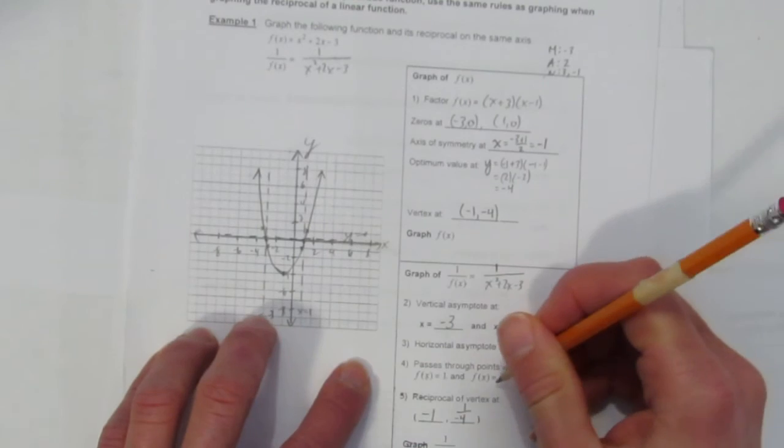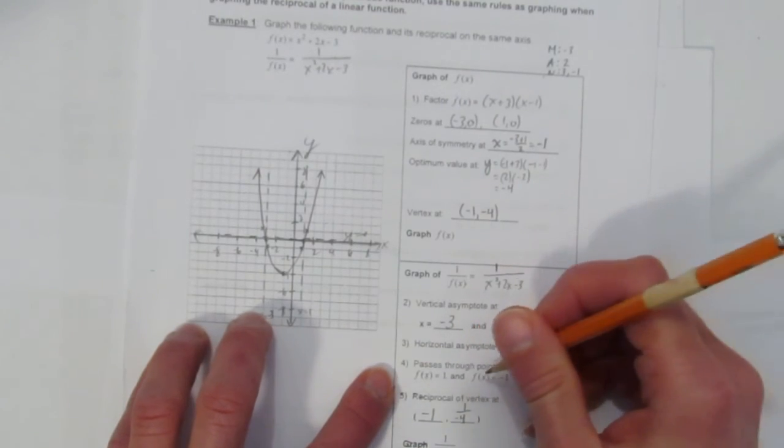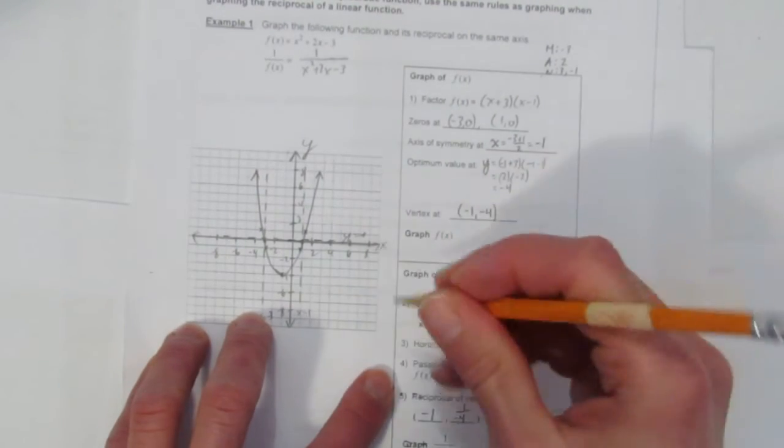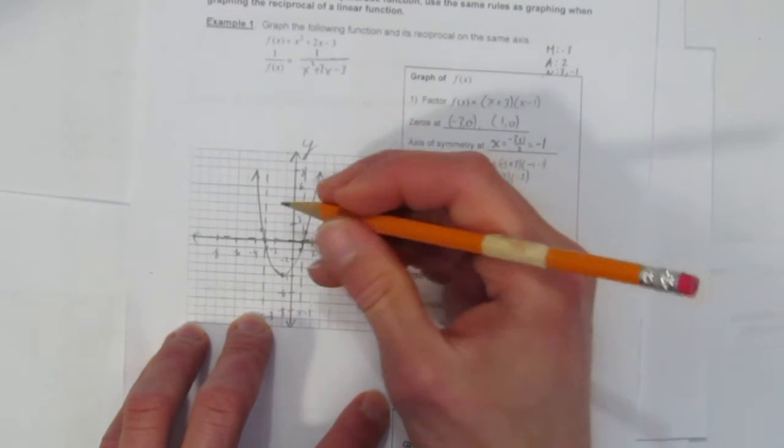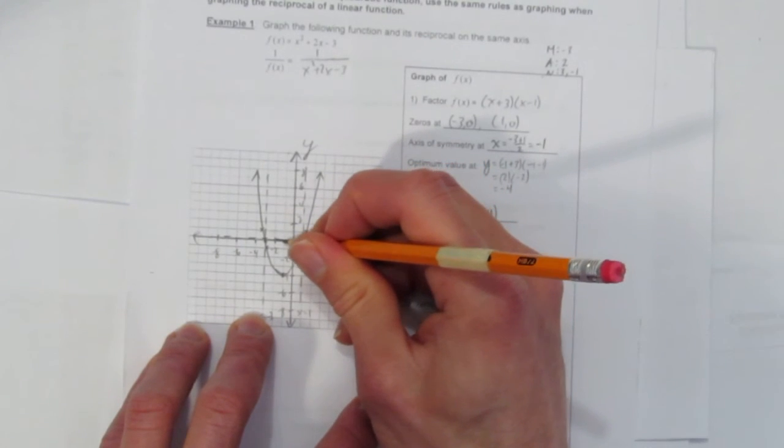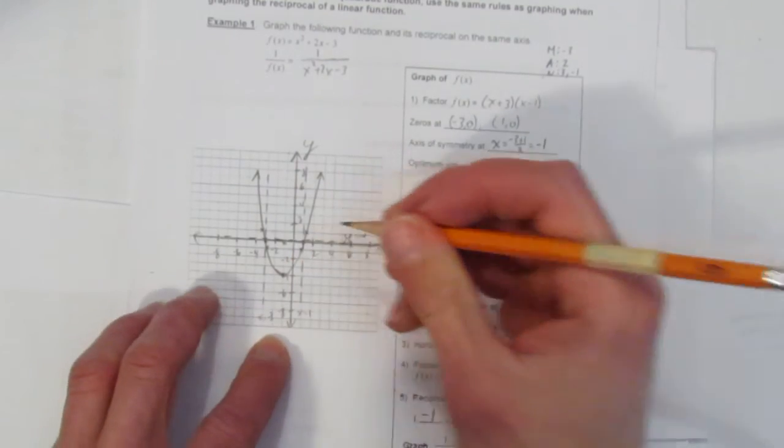And then we're going to make sure to pass through those points at y is 1 and y is -1. And then finally the reciprocal vertex is at (-1, -1/4), right up here.